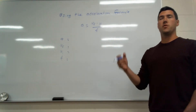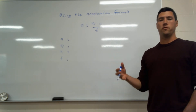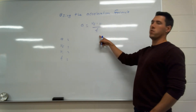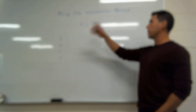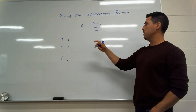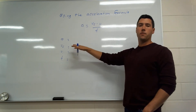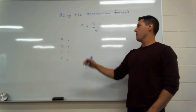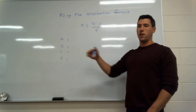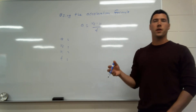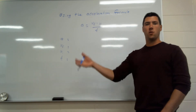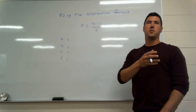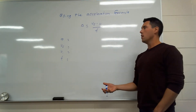This video is about using the acceleration formula. The formula is: acceleration equals vf minus vi over t. The 'a' stands for acceleration, 'vf' is velocity final — the speed the object ended at — 'vi' is velocity initial, your starting speed, which could be from rest or some given starting speed, and 't' is the time involved in the question — how much time was taken to accelerate.